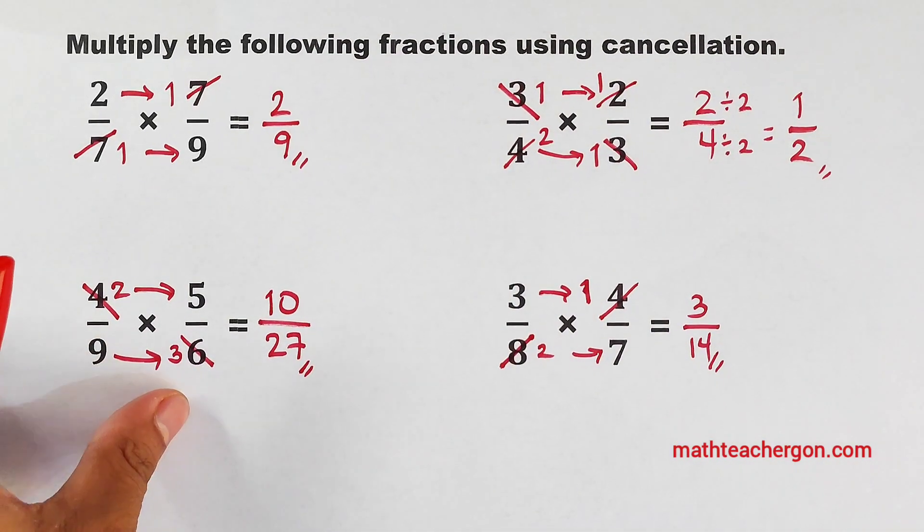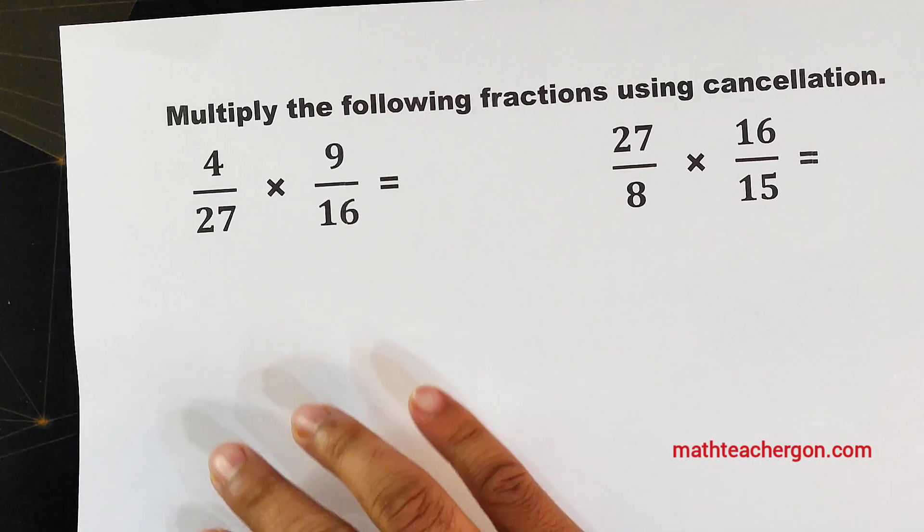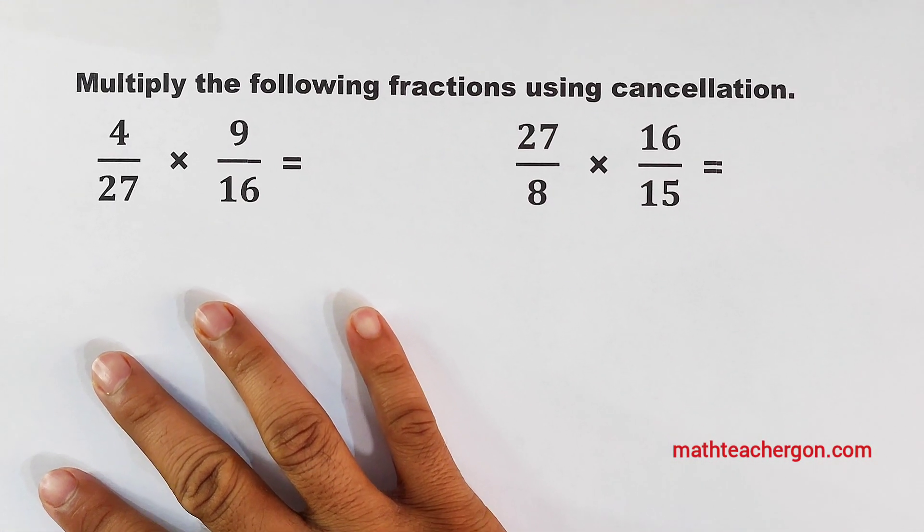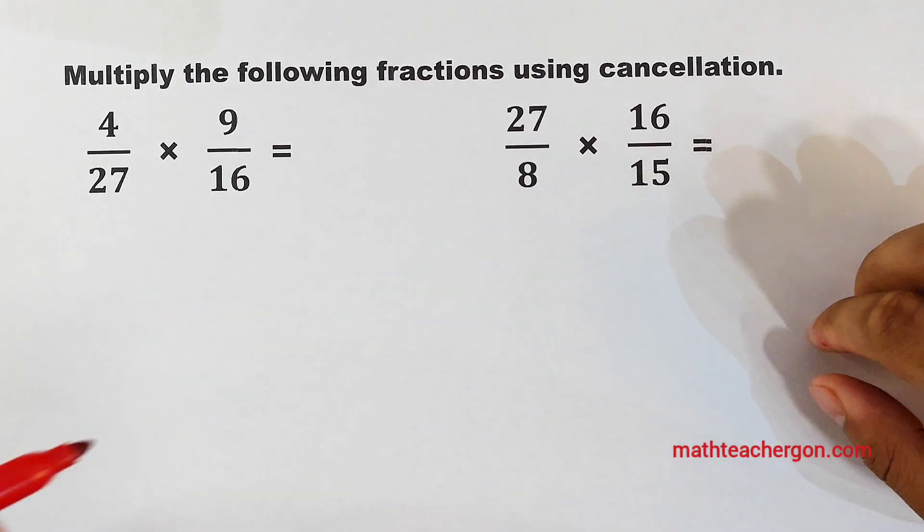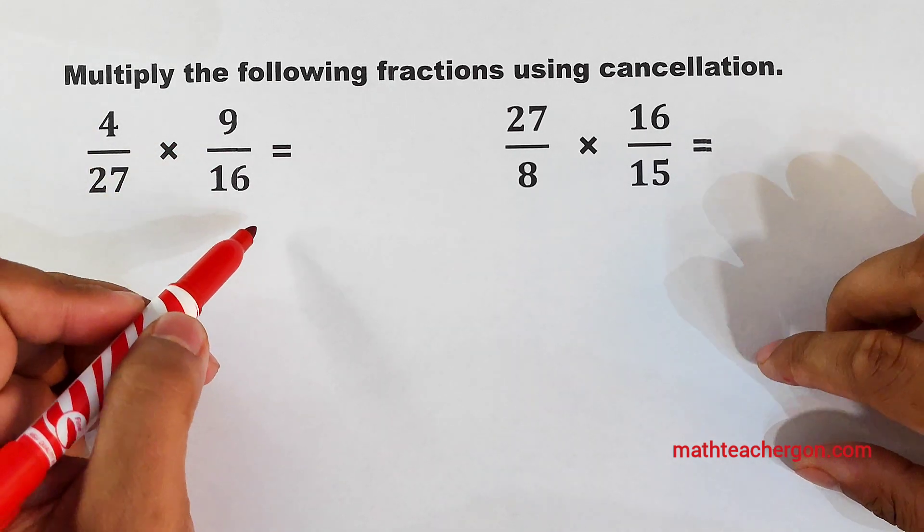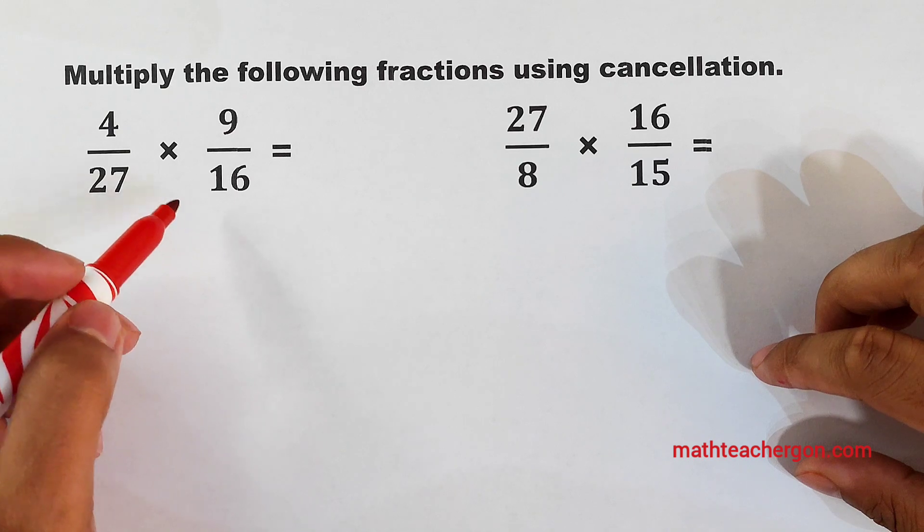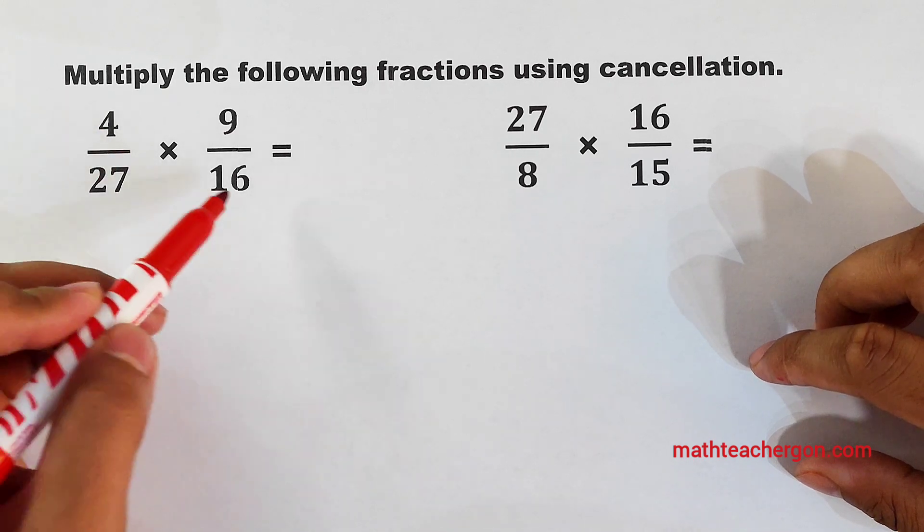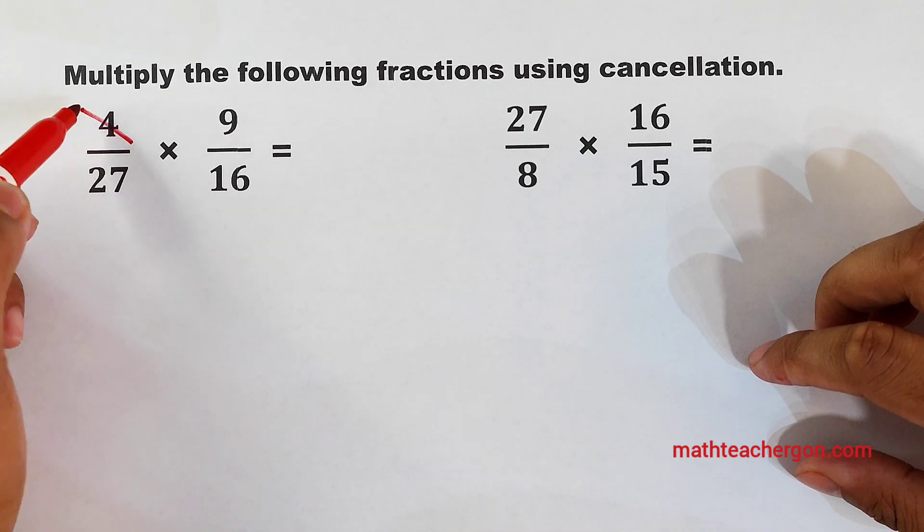Now let's continue with our next examples. So what we have here are two more examples. We have 4 over 27 times 9 over 16. So let's try to cancel some numbers. We have here 4 and 16. It can be canceled out.